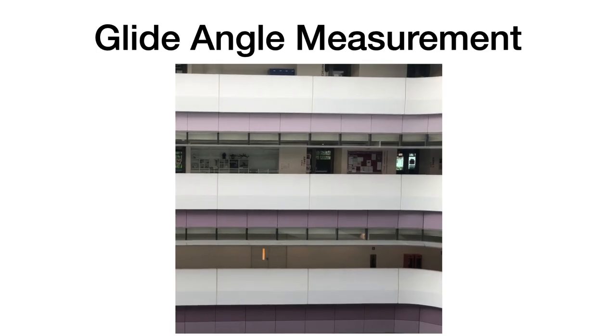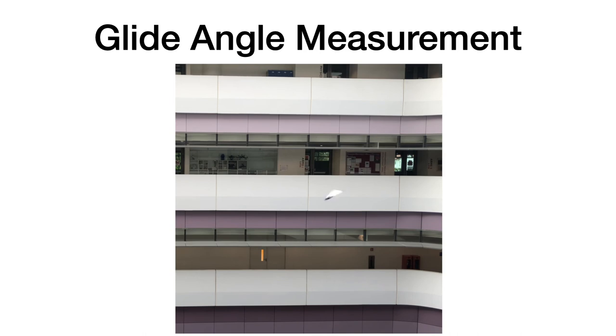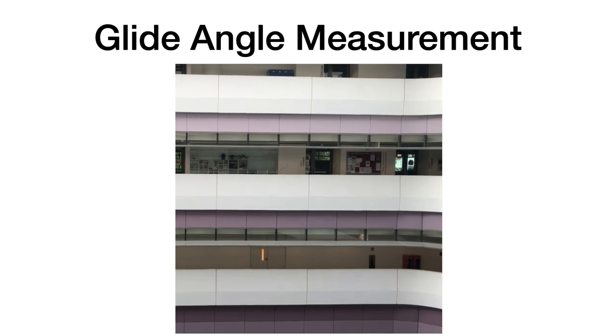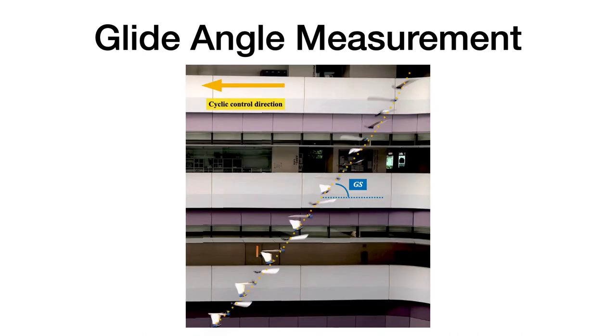Next, square cyclic control is applied. The glide angle is measured from a camera positioned orthogonally. It is measured to be about 47.9 degrees.